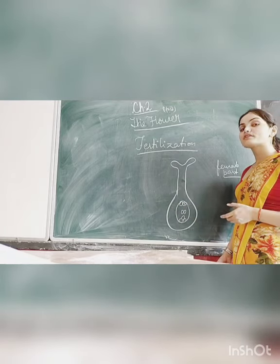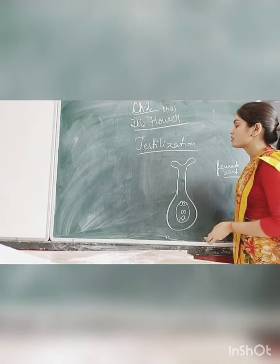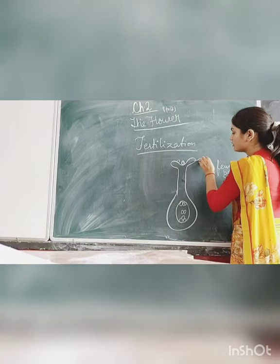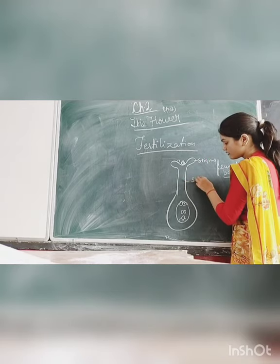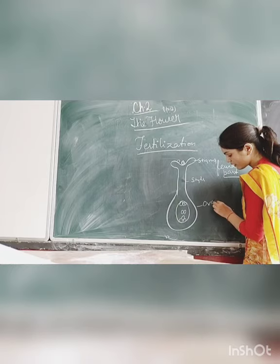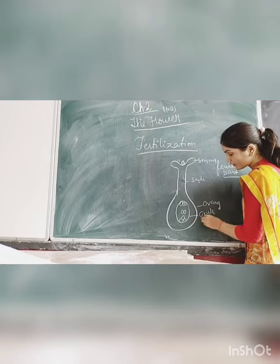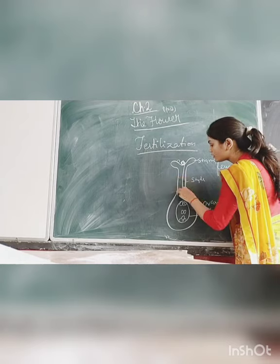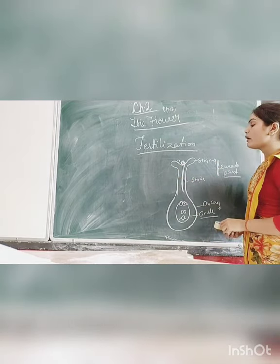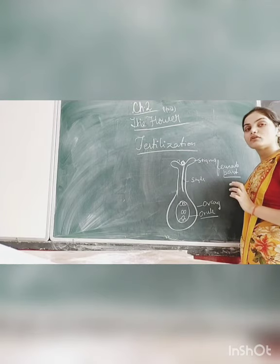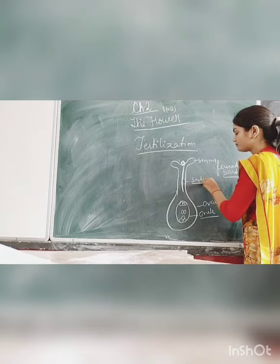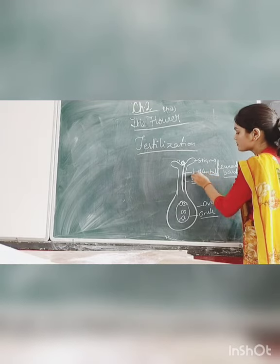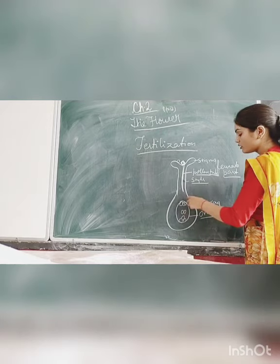In flowering plants, pollen grains are the male gametes. The pollen grain gets attached to the stigma, then travels through the style into the ovary. You can see the parts: stigma, style, ovary. The pollen grain forms a pollen tube to penetrate inside the style. The pollen tube is responsible for the penetration of the pollen grain inside the ovary.